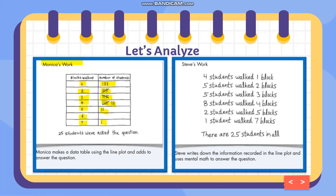After that she added: four plus five is nine, plus five is 14, plus eight is 22, plus two is 24, plus one is 25. That's why 25 students were asked the question. Now for Steve's work — Steve writes down the information recorded in the line plot and uses mental math to answer the question.